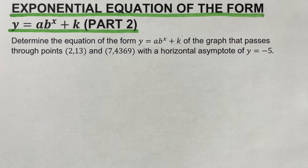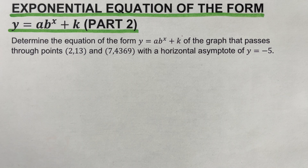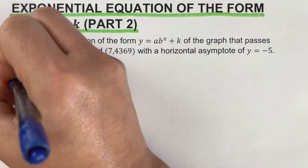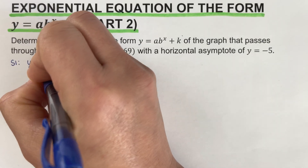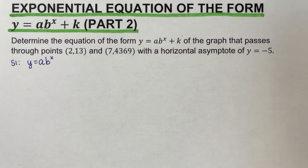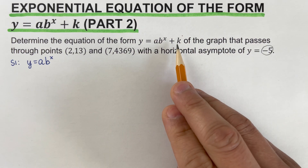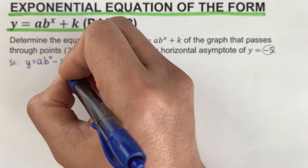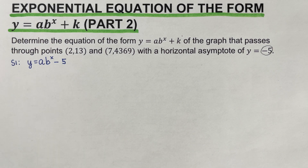Step one: write the general equation of the form y = a·b^x + k. The general equation is y = a·b^x. Since the horizontal asymptote is y = negative 5, we plug that into k, so the equation becomes y = a·b^x minus 5. If the asymptote were positive 5, it would be plus 5.